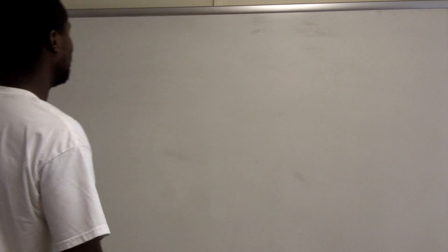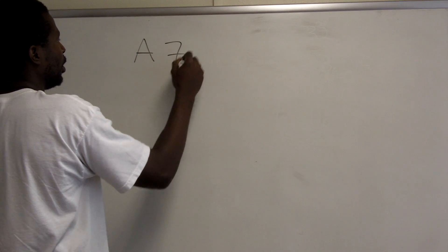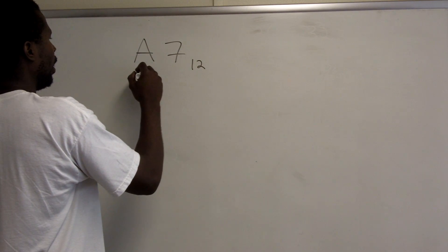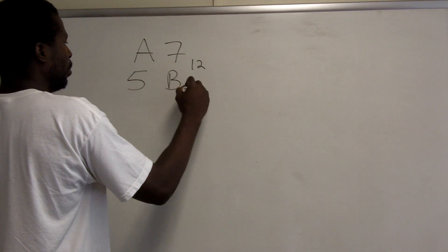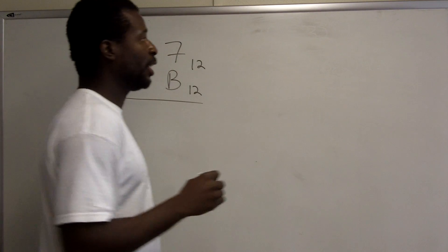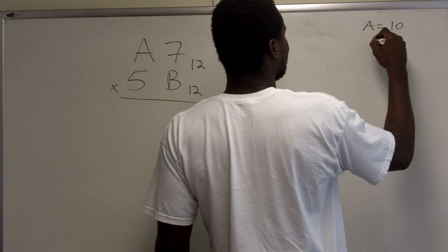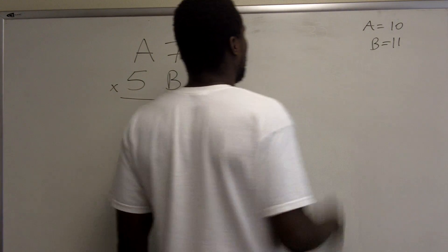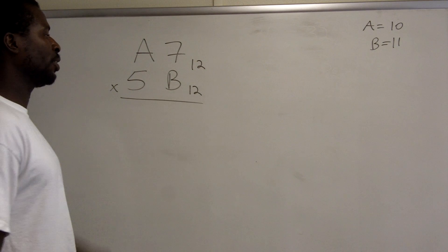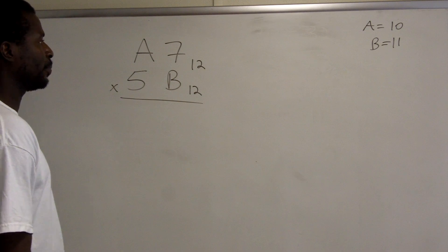Now let's try the same thing with a base larger than 10. Let's multiply 7a base 12 by 5b base 12. In base 12, the numerals 0 through 9 are the same, but the numeral for 10 is 'a' and the numeral for 11 is 'b'. We don't need a numeral for 12 itself — only for 0 through 11.